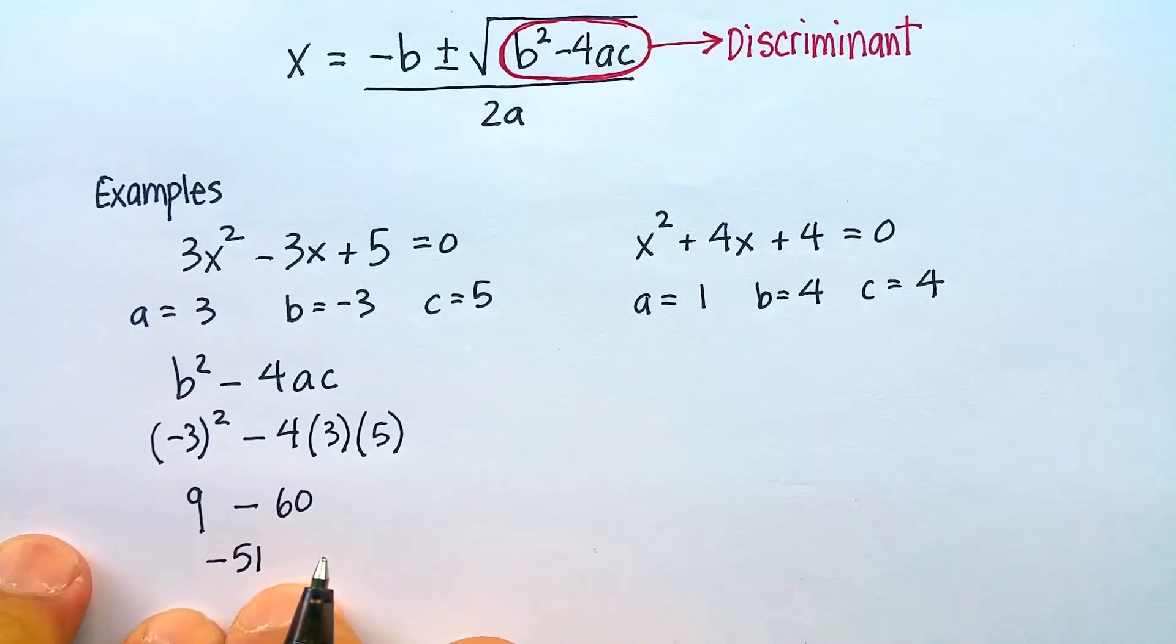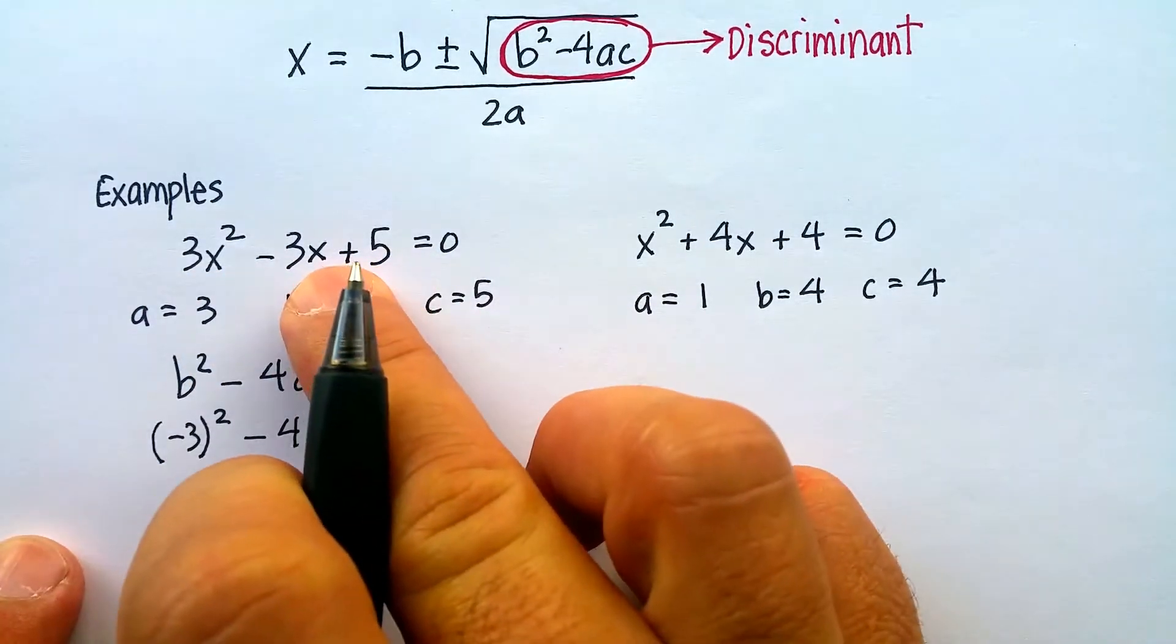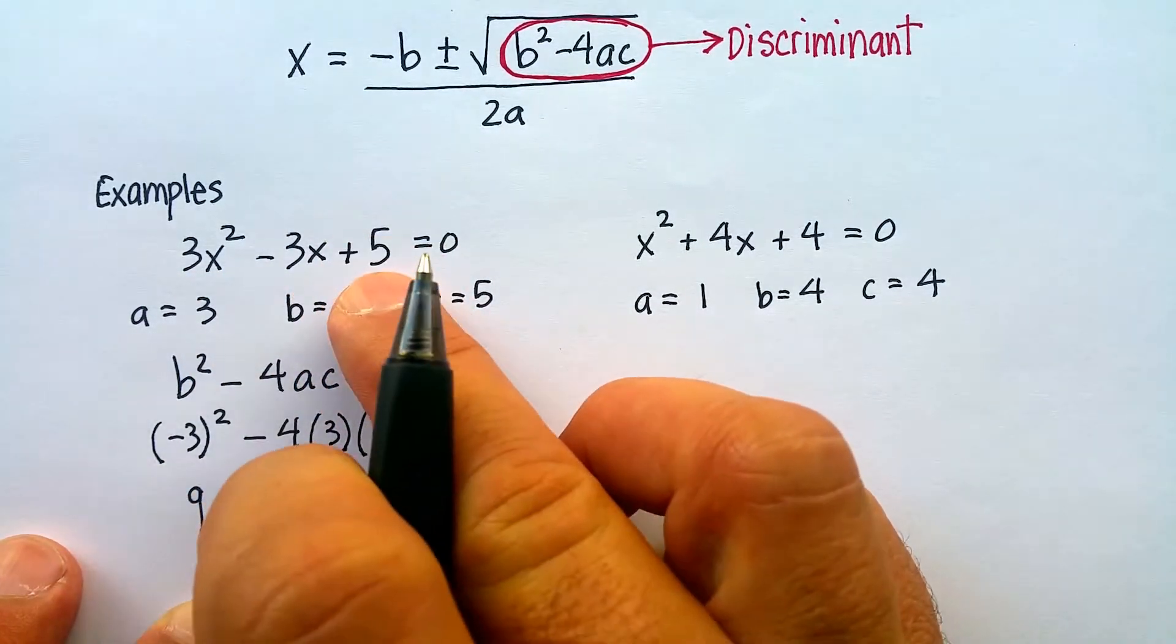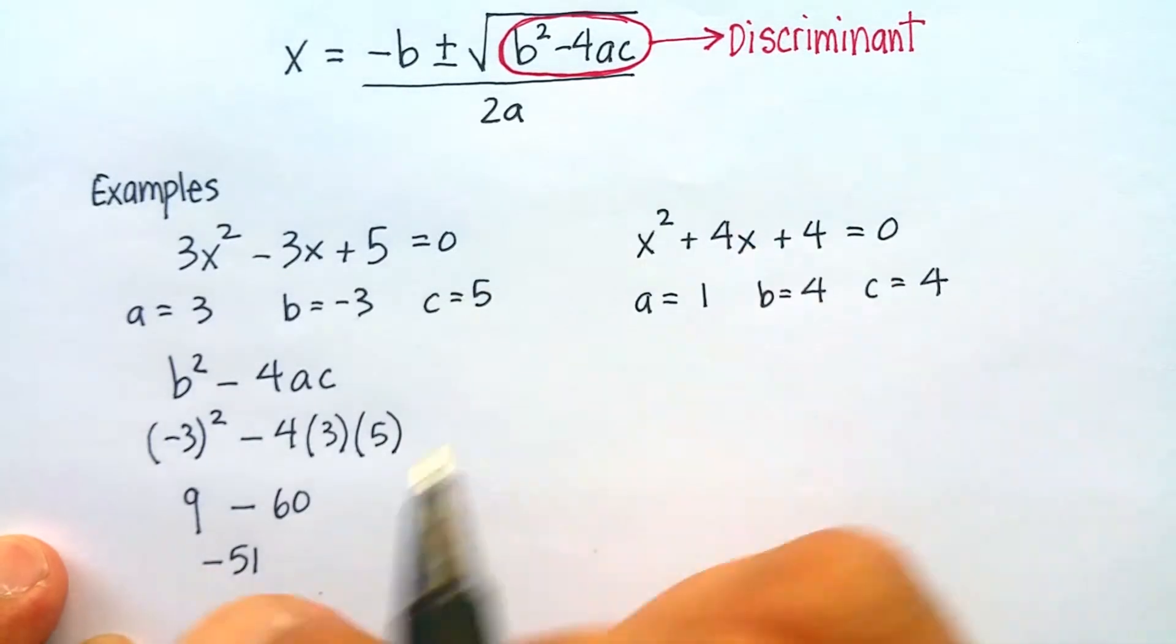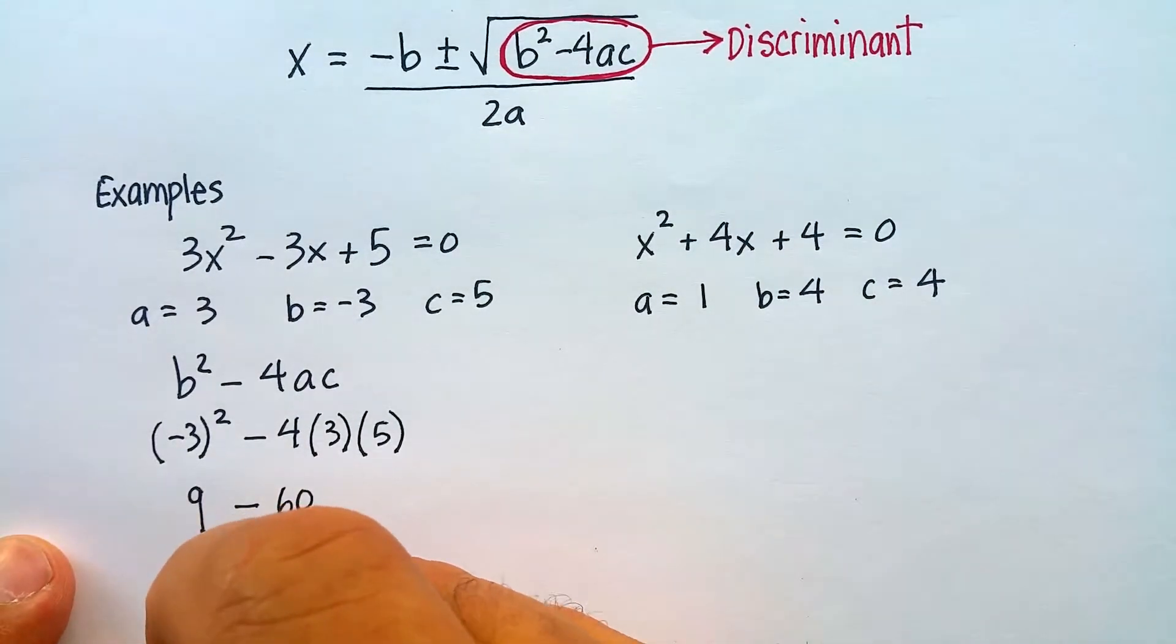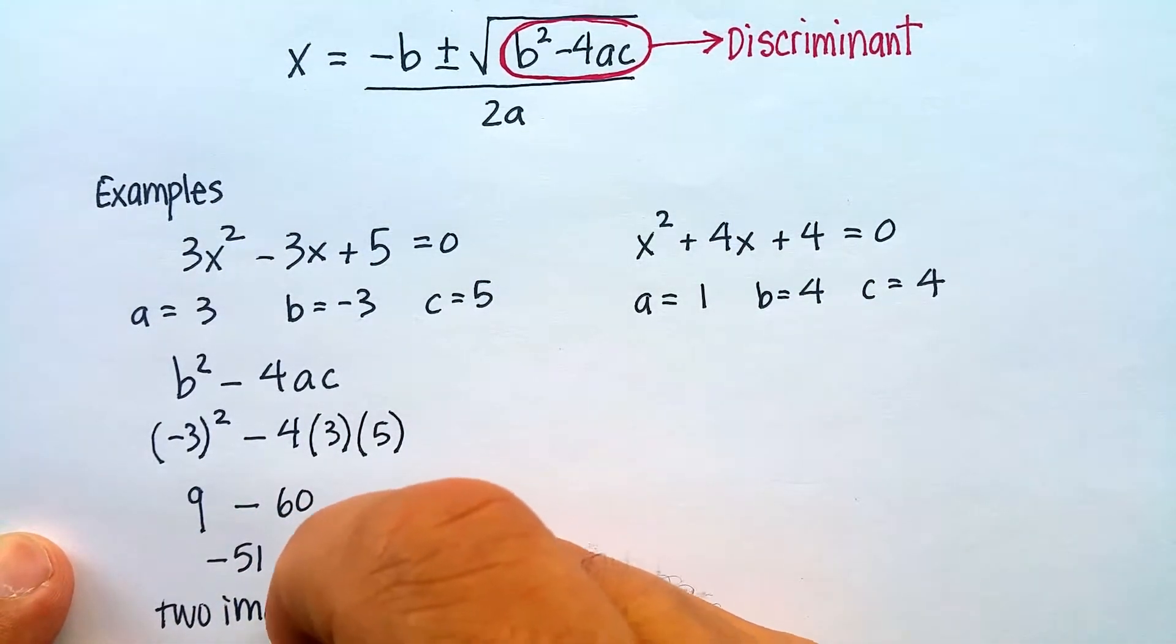My answer is going to be a negative 51. This tells me that this particular quadratic equation will not cross the x-axis at all. So I'm going to have two imaginary roots.